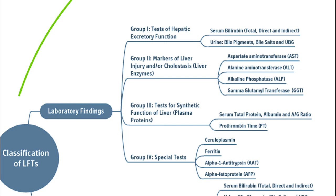Group 3 covers tests for synthetic function of liver — mainly plasma proteins and clotting factors; measuring their quantity gives a fair idea of the extent of liver cell injury. Group 4 includes special tests such as synthesis of ceruloplasmin, ferritin, alpha-1 antitrypsin, and alpha-fetoprotein. These are the four groups in the classification based on laboratory findings.